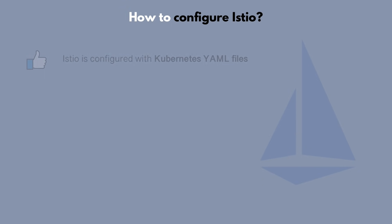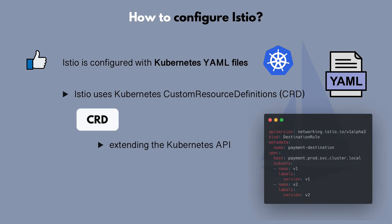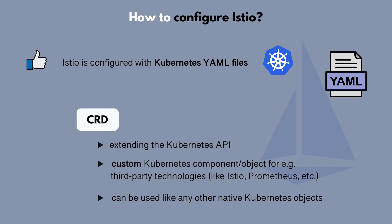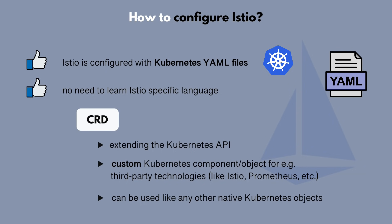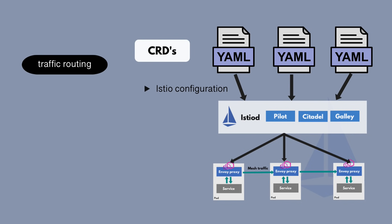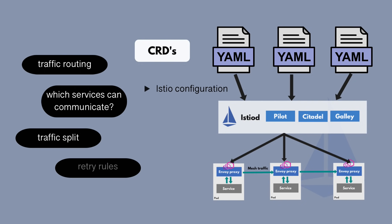The great thing is that Istio can be configured with Kubernetes YAML files because it uses CRDs by extending the Kubernetes API. A CRD is basically a custom resource or custom component in Kubernetes that allows configuring third-party technologies like Istio, Prometheus, etc., using the same Kubernetes YAML files and applying them with kubectl — without having to learn a technology-specific configuration language. Using a few Istio CRDs, we can configure different traffic routing rules between our microservices, like which services can talk to each other, traffic split configuration, retry rules, timeouts, and many other network configurations.